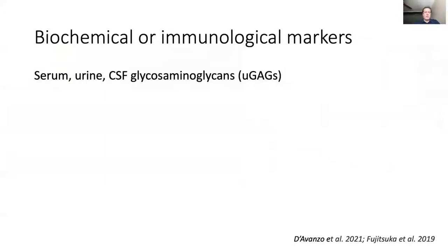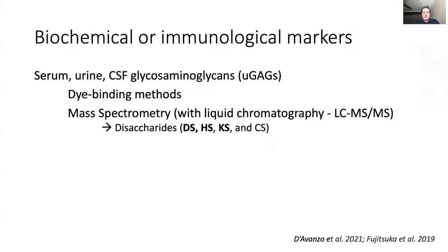Regarding biochemical and immunological markers: we can measure glycosaminoglycans in serum, urine, and CSF. Dye-binding methods are nonspecific; mass spectrometry with chromatography or tandem mass spectrometry can specifically measure dermatan sulfate, heparan sulfate, keratan sulfate, or chondroitin sulfate. These were shown to be increased in MPS-2, and they distinguished between treated and untreated MPS-2 with hematopoietic stem cell transplant, but they didn't show a difference between severe and mild.